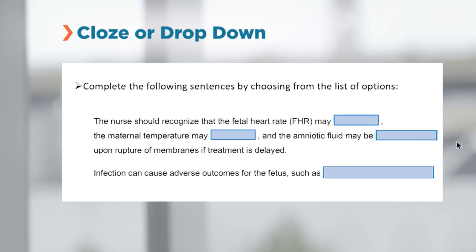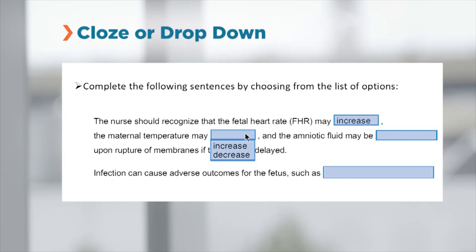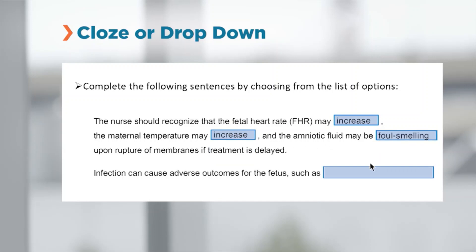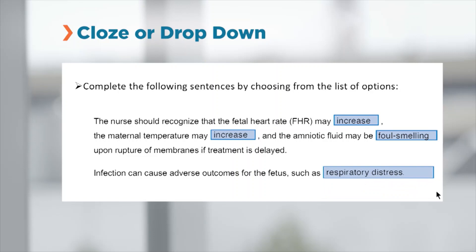In Cloze or Drop-down questions, you can select one answer option from a drop-down list of words or phrases, and these can be found within tables or charts.